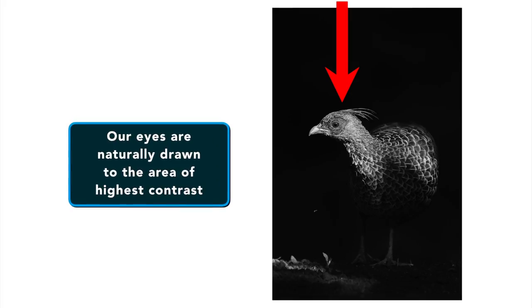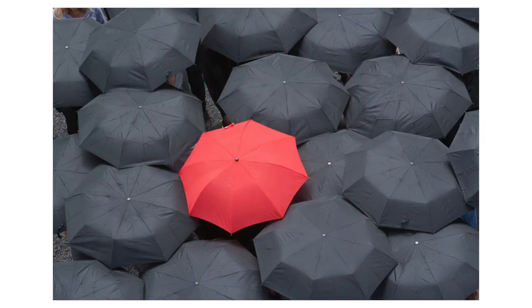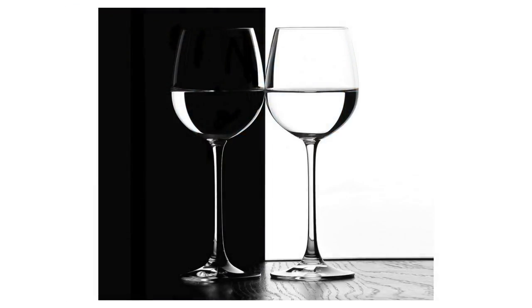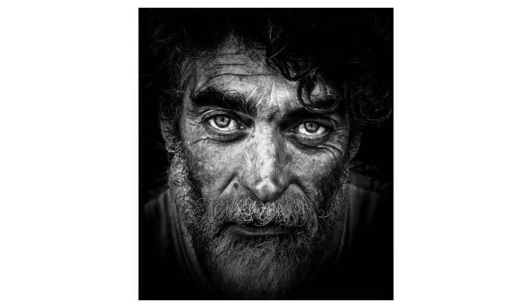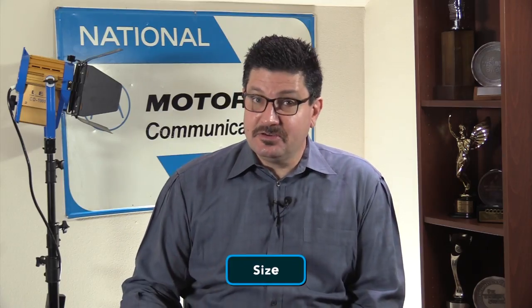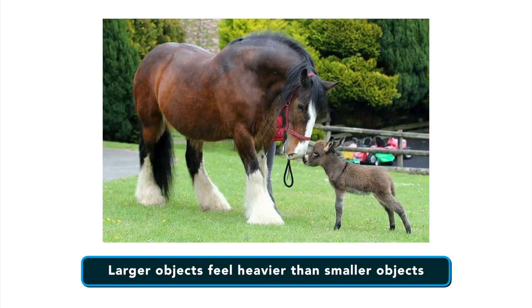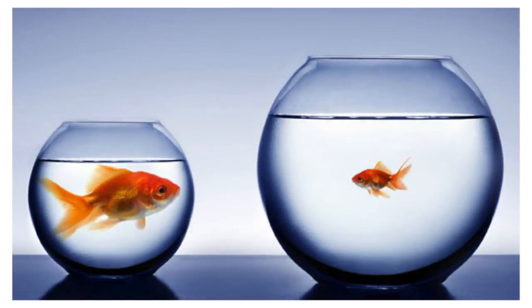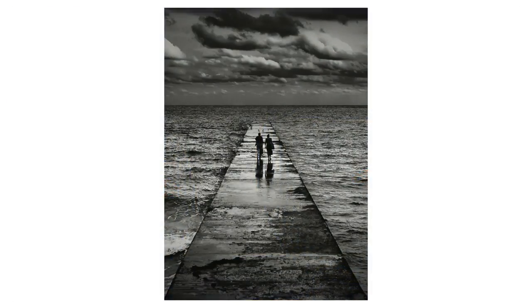Next thing to consider is value and contrast. Our eyes are naturally drawn to the areas of highest contrast in an image. This could mean the lightest area, the darkest area, the brightest color and so forth, depending upon the image or the scene. This is an easy one to create with artificial lighting if whatever you're shooting is lacking interest. Next thing to consider is the size of subjects within the frame. Larger objects feel heavier than smaller objects — they command more attention. Remember, this rule could be trumped by other factors. If the smaller object in the scene is of higher contrast, our eyes are likely to go there first.